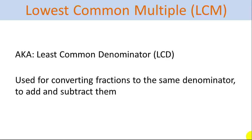The lowest common multiple is also called sometimes the least common denominator — the denominator being the lower number of a fraction — because it's used for converting fractions to the same denominator so that you can do addition and subtraction operations on them.